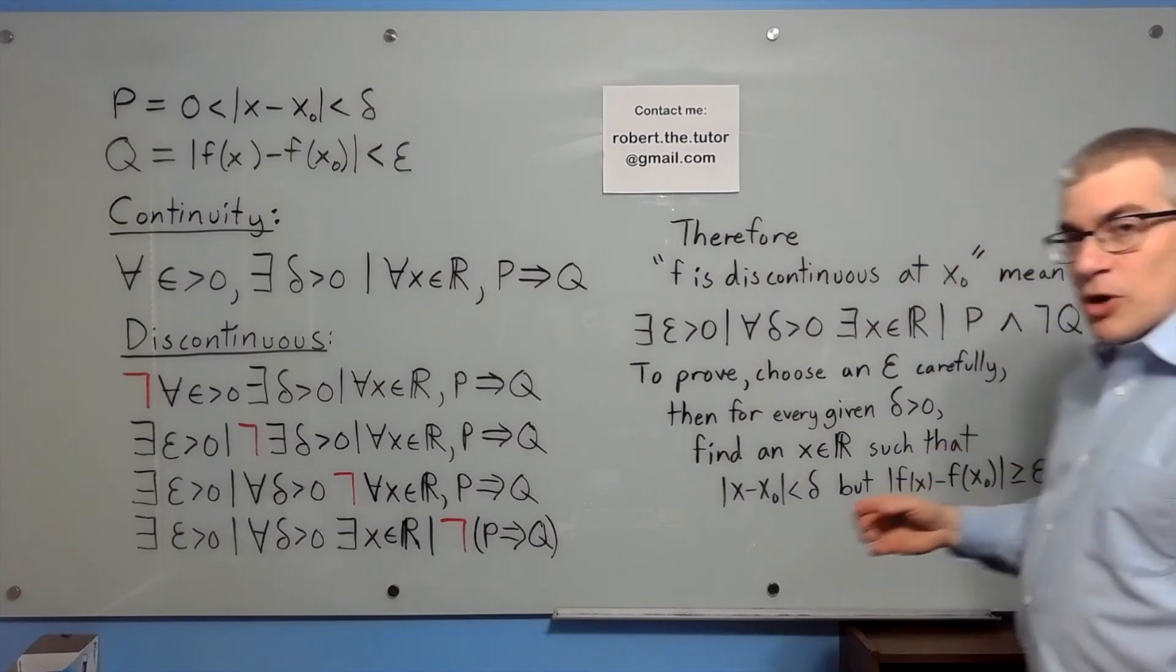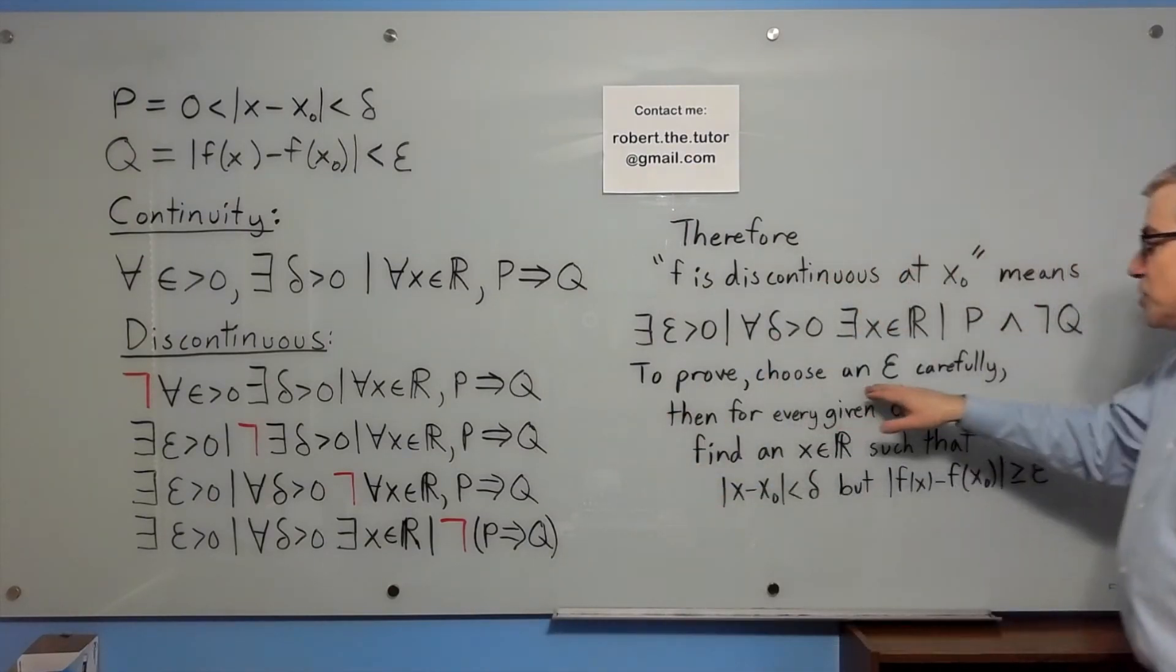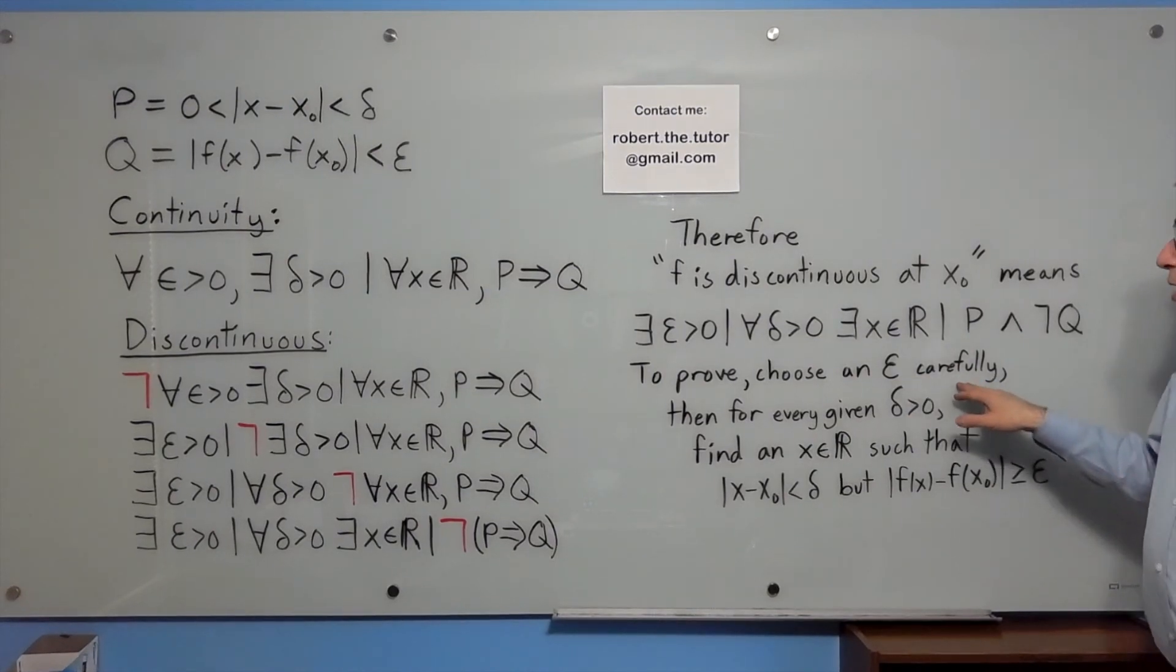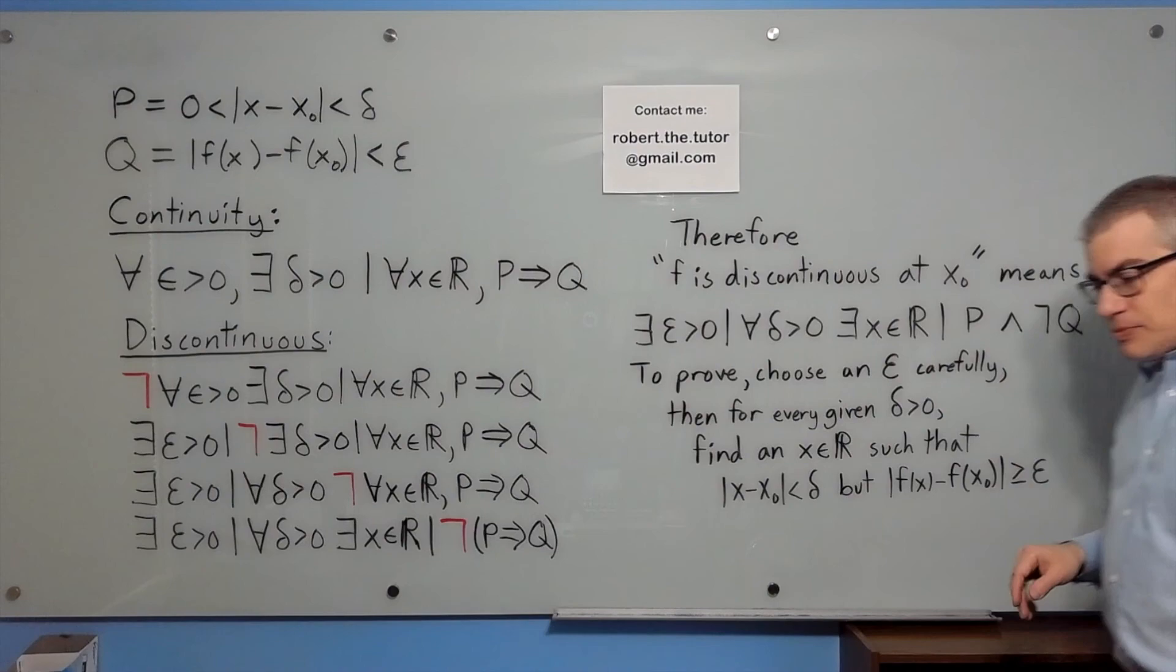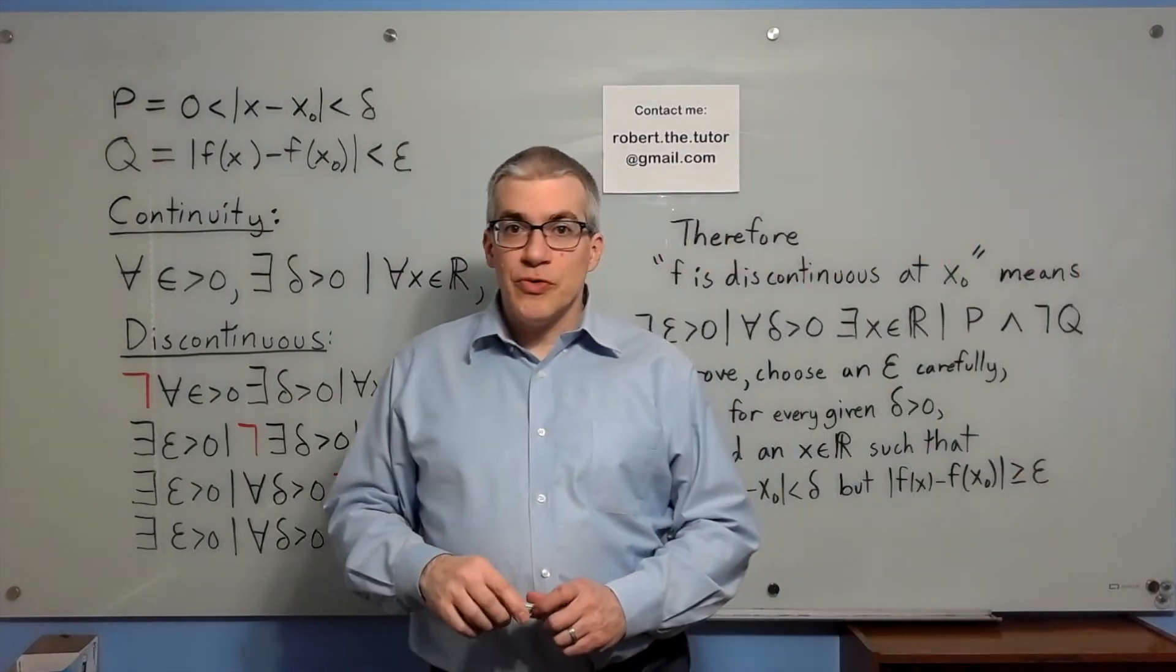So if you want to prove this, you choose an epsilon carefully, then for every given delta greater than zero, you need to find an x such that this is true, but this is also true. And that is how you prove discontinuity.